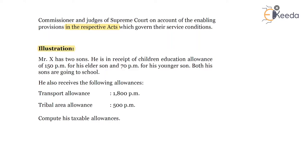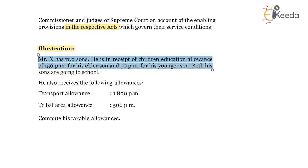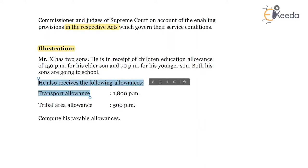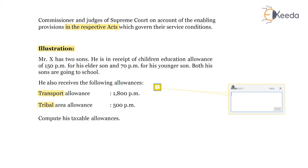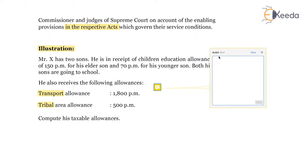Illustration: Mr. X has two sons. He is in receipt of children education allowance of 150 per month for his elder son and 70 per month for his younger son. Both his two sons are going to school. He also receives the following allowances: transport allowance of 1,800 per month and tribal area allowance of 500 per month. We are expected to compute his taxable allowances.